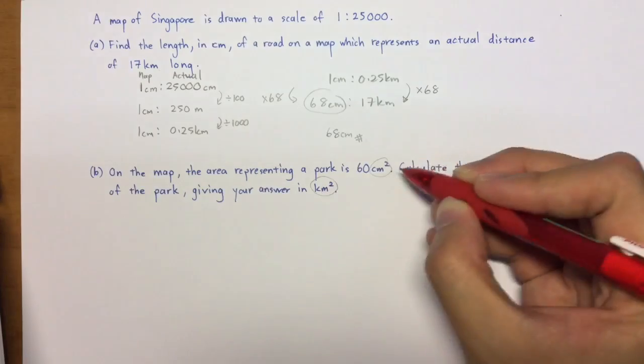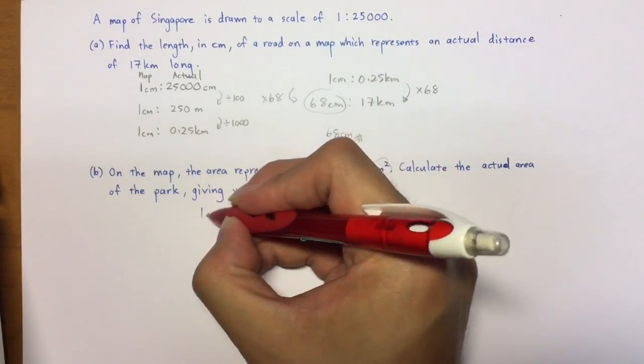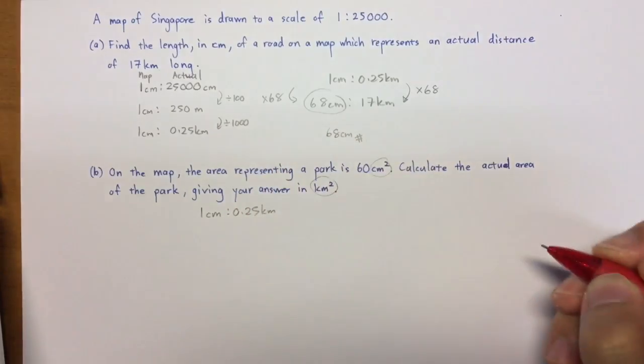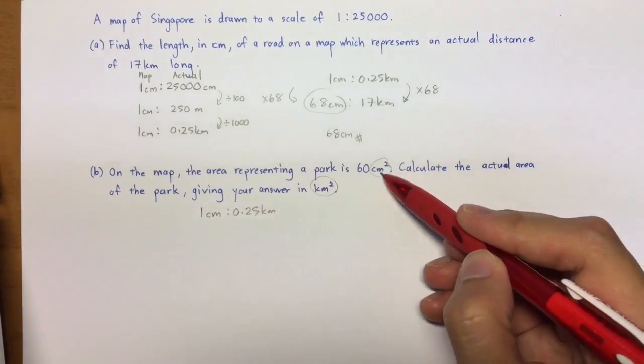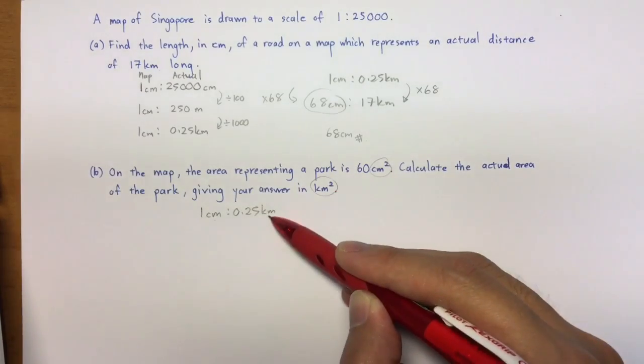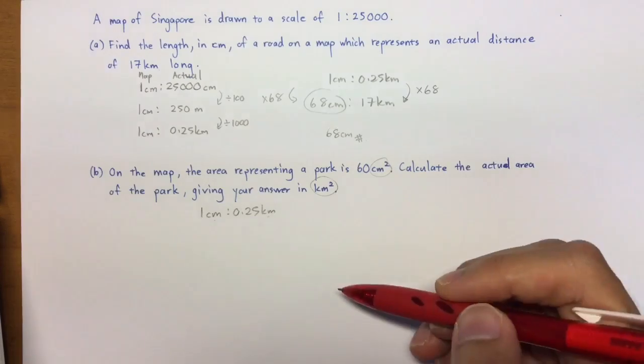So, the root unit that I should use, actually, is the cm to km first. So I'll write it down here. Why do I use this? Because I know I have cm² that will come from here and km² that comes from here. Okay, so cm will change to cm². km will change to km².